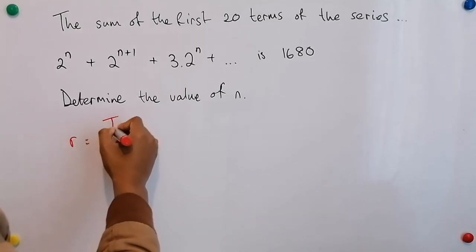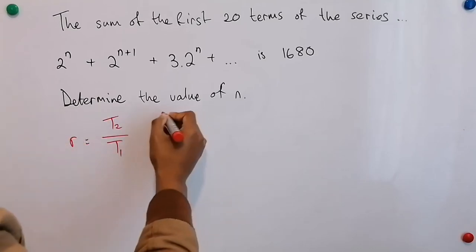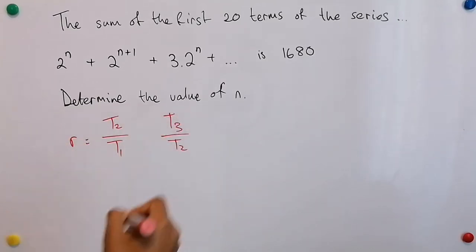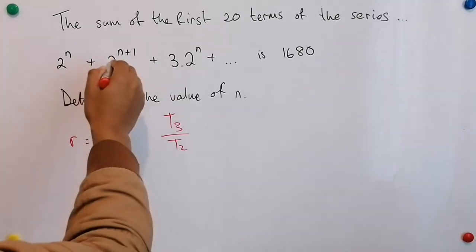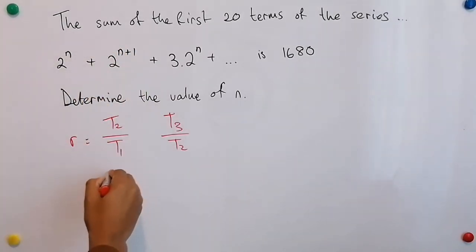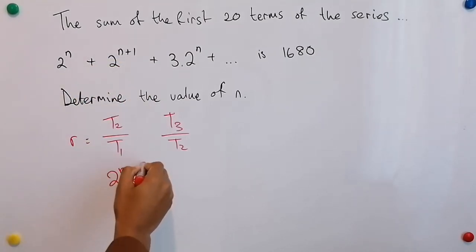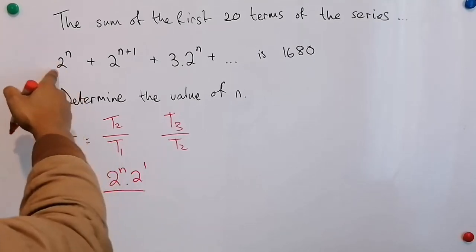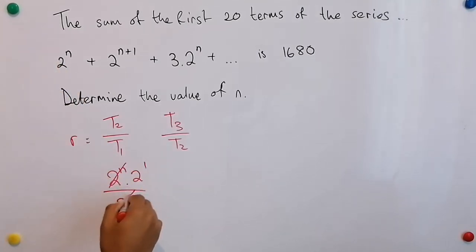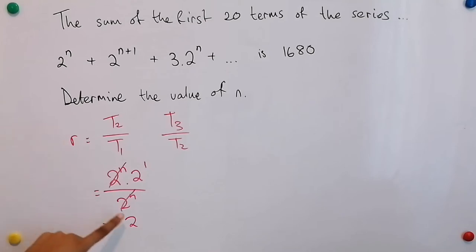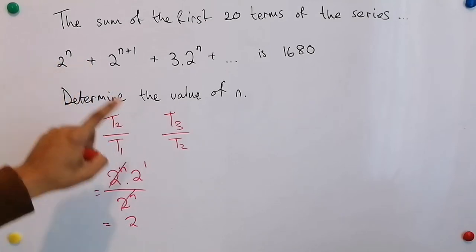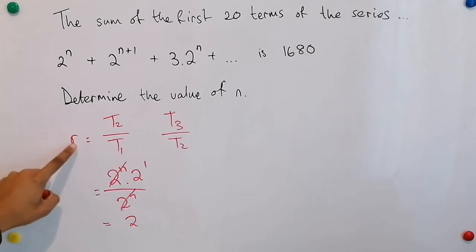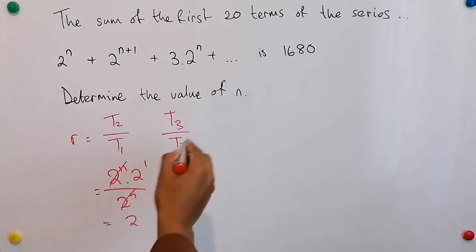If we say term 2 over term 1, this should be the same as term 3 over term 2. So our second term is 2 to the power of n plus 1. Now I'm going to write that as 2 to the power of n times 2 to the power of 1. Because when I divide by this first term, I notice these 2 to the power of n cancel and then we are just left with the 2 to the power of 1. So the ratio is 2 for the first two terms. Now if that is going to be consistent here, then I know we have a constant ratio, which means it's geometric. So let's test that theory out.